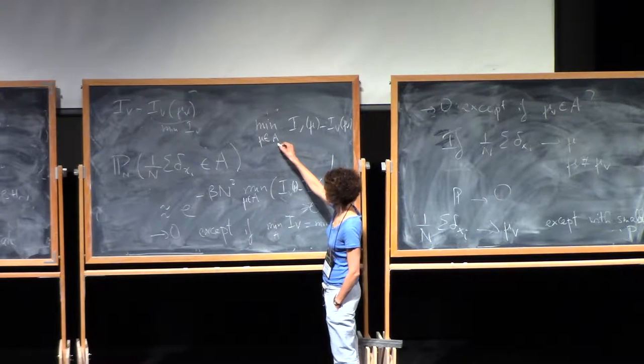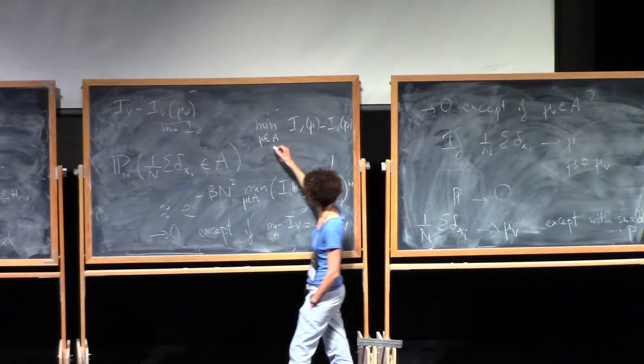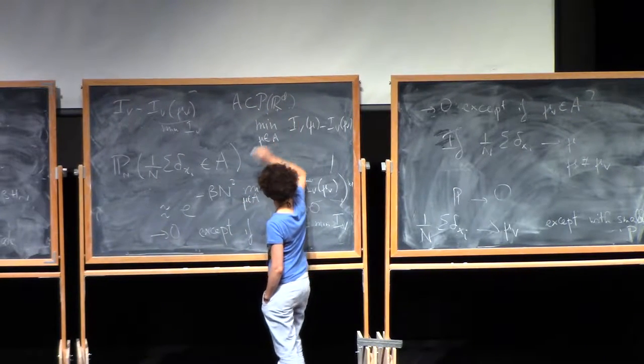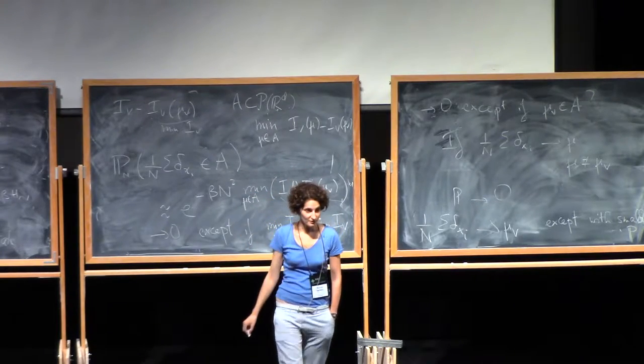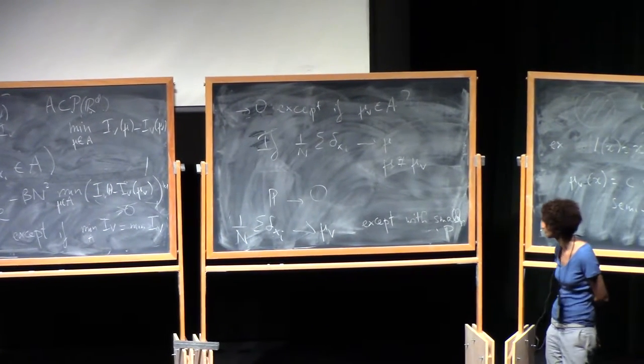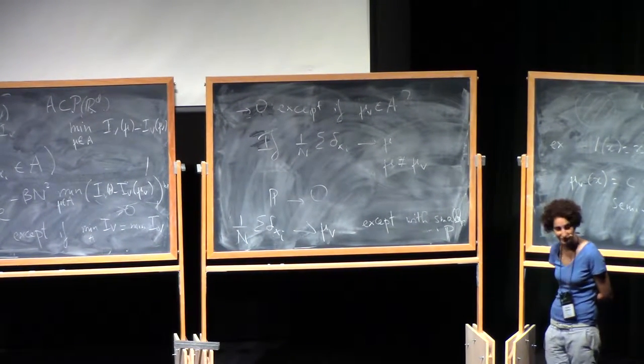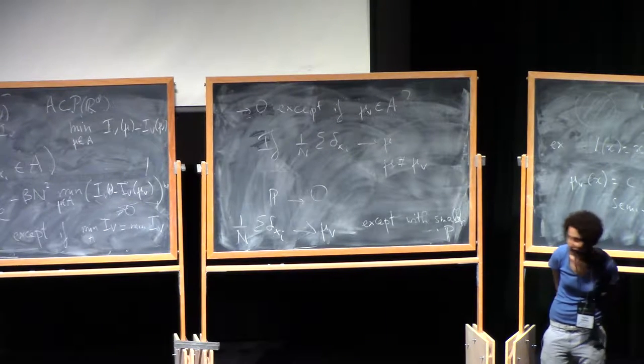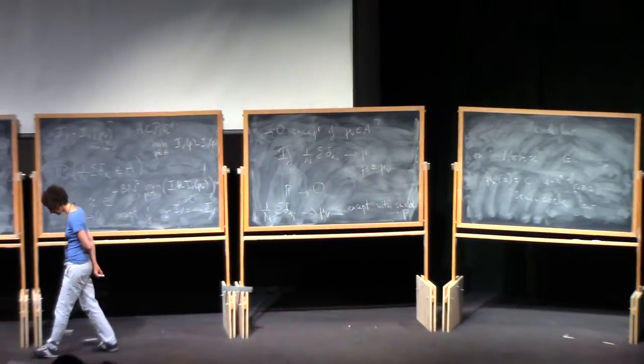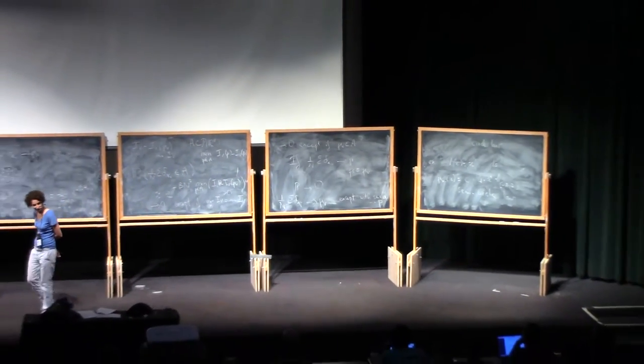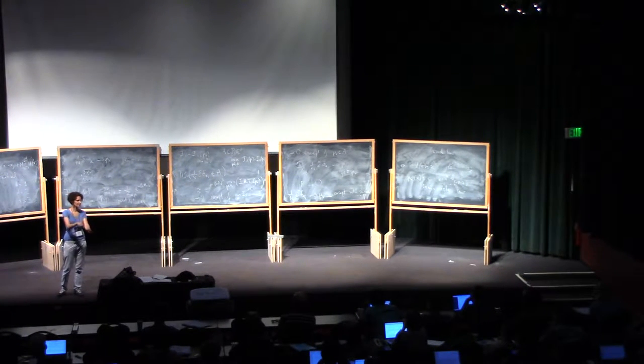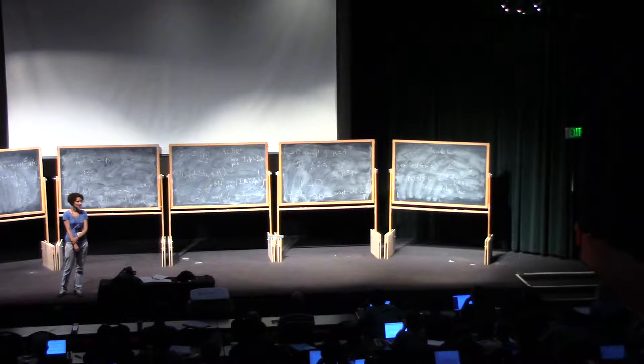These are probability measures, right? A is a subset of probability measures. So now you can minimize IV. It's a different A? A is a subset of probability measures, right? And you're asking what's the probability that I'm going to land in there when I take the limit as n goes to infinity.